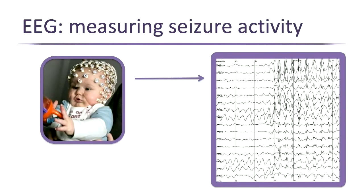We can measure and visualize seizures and electrical activity in the brain with a test called the EEG — electroencephalogram. A baby has dots stuck onto their head, each being a little electrode measuring electrical activity through the skull — we don't have to put them into the brain. Each spot's electrical activity is depicted as a line. On a normal EEG you see baseline activity, but at a seizure onset the activity gets much, much greater — neurologists use this to detect and measure seizures.